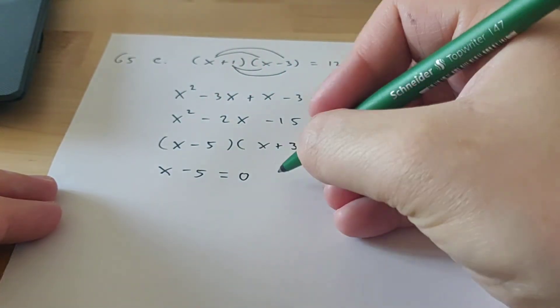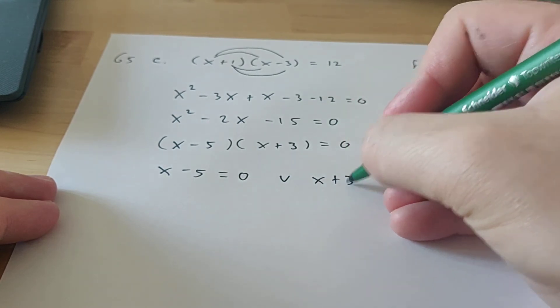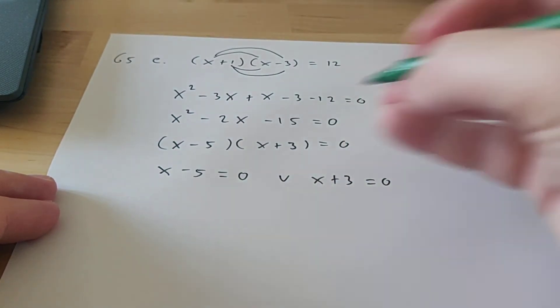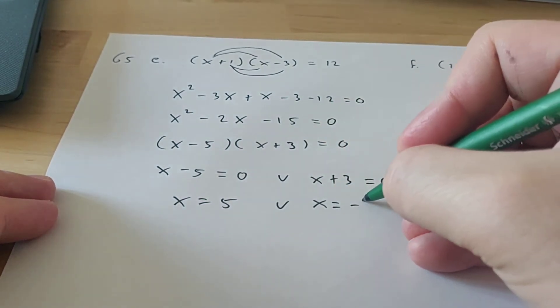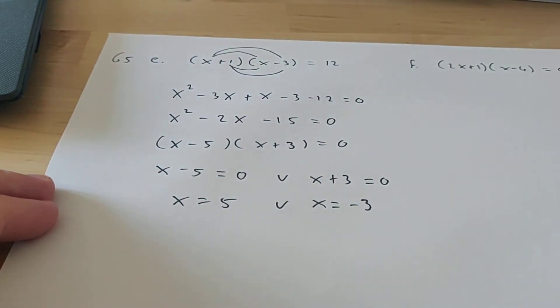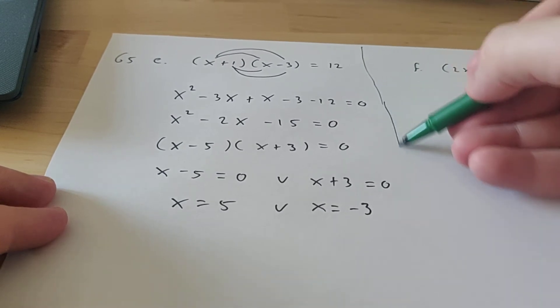Like x minus 5 is 0, or x plus 3 is 0. So that means that x is 5, or x is minus 3. So this is how you do that. So it's kind of big, as you can see.